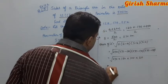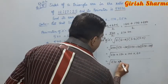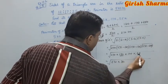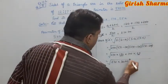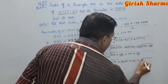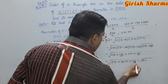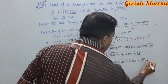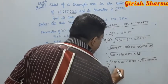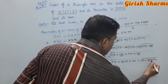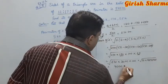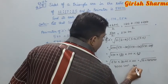So the product under the root is 270 times 150 times 100 times 20. Simplifying: we get 81 times 10 to the power 6 under the root. Square root of 81 is 9, and 6 zeros give 3 pairs, contributing 10 cubed equals 1000. The area is 9000 centimeters squared.